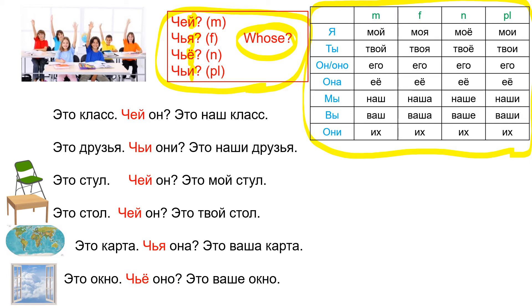Let's do some examples. Это класс — 'class' means a classroom and a group of people. Чей он? Это наш класс. Наш — 'our' — class is masculine, so we use наш. Here is an example of how to use this table. Это друзья. Чьи они? Друзья is plural, so: это наши друзья — we use the plural form of 'our': наши. Это стул. Чей он? Это мой стул. Мой.